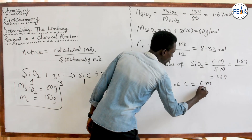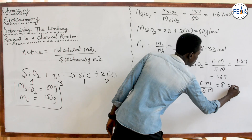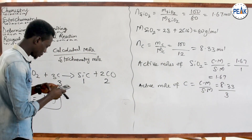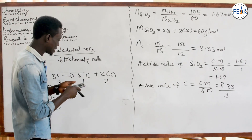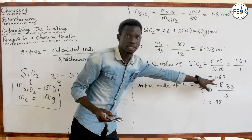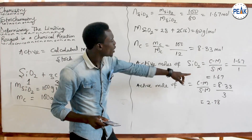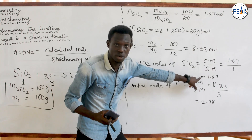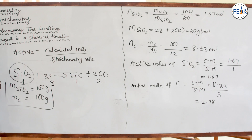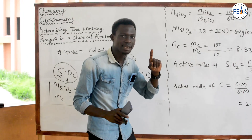Active mole of carbon = calculated mole ÷ stoichiometric mole = 8.33 ÷ 3 = 2.78. Now comparing: active mole of SiO₂ = 1.67, active mole of carbon = 2.78. Since 1.67 is the smallest active mole, SiO₂ is the limiting reagent, and carbon is the excess reagent.